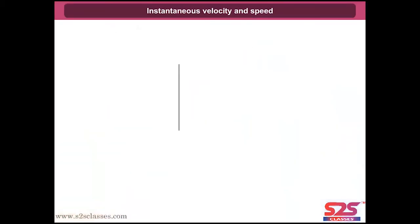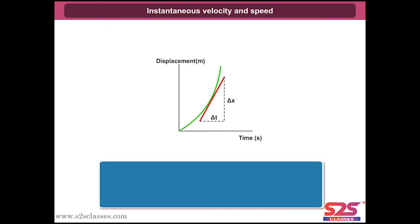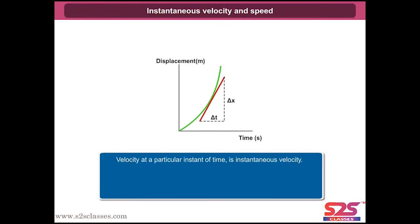Instantaneous velocity and speed: velocity at a particular instant of time is instantaneous velocity. That is, V equals the limit as delta T tends to zero of delta X upon delta T, which equals dx upon dt.